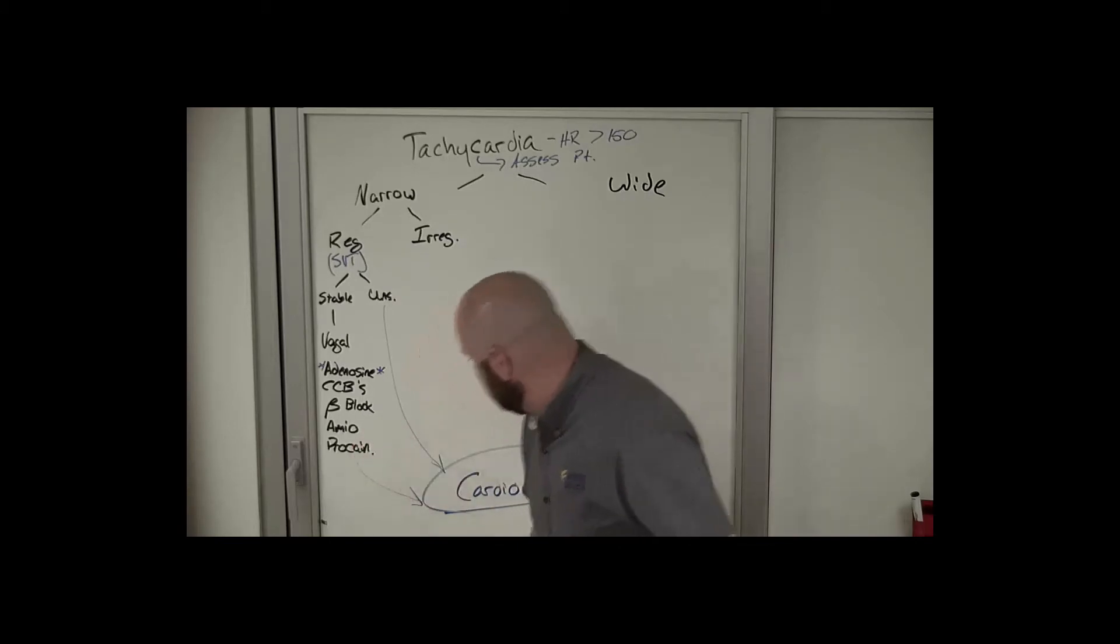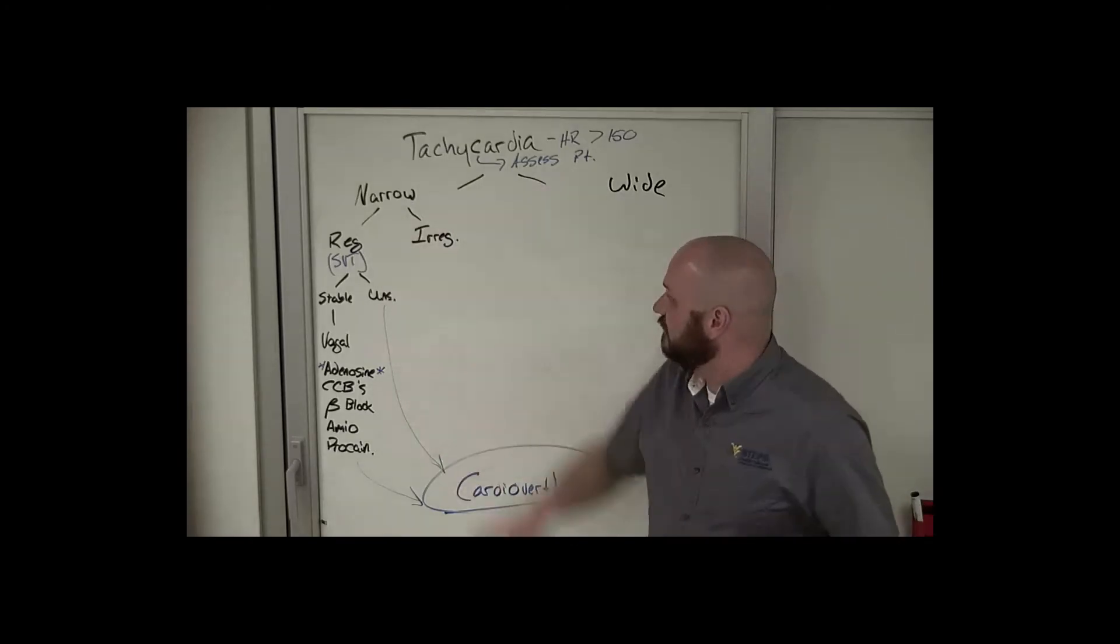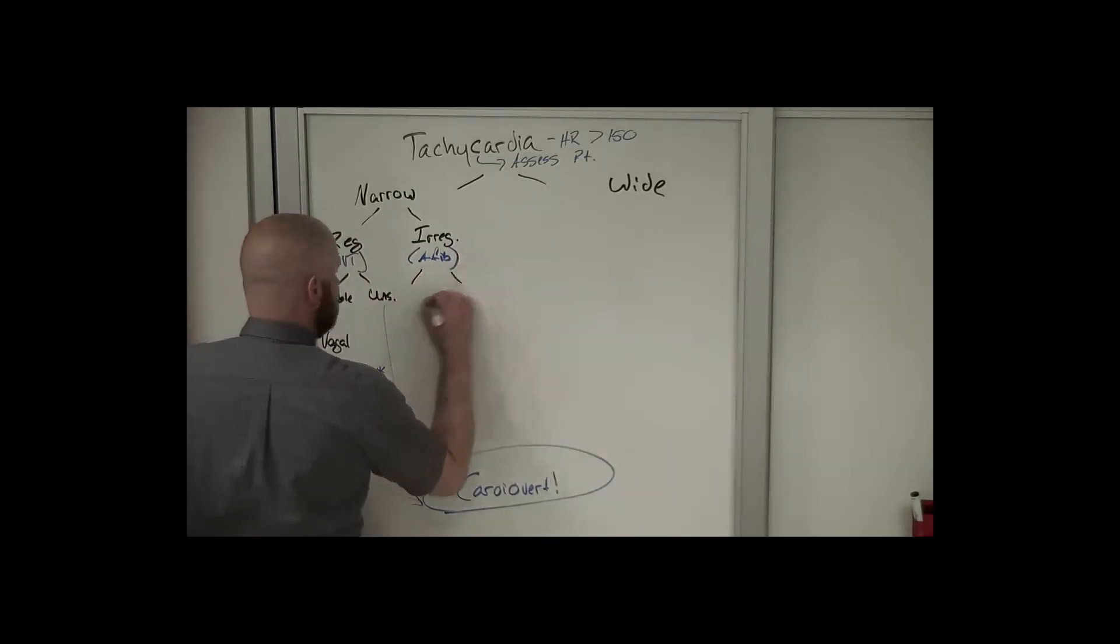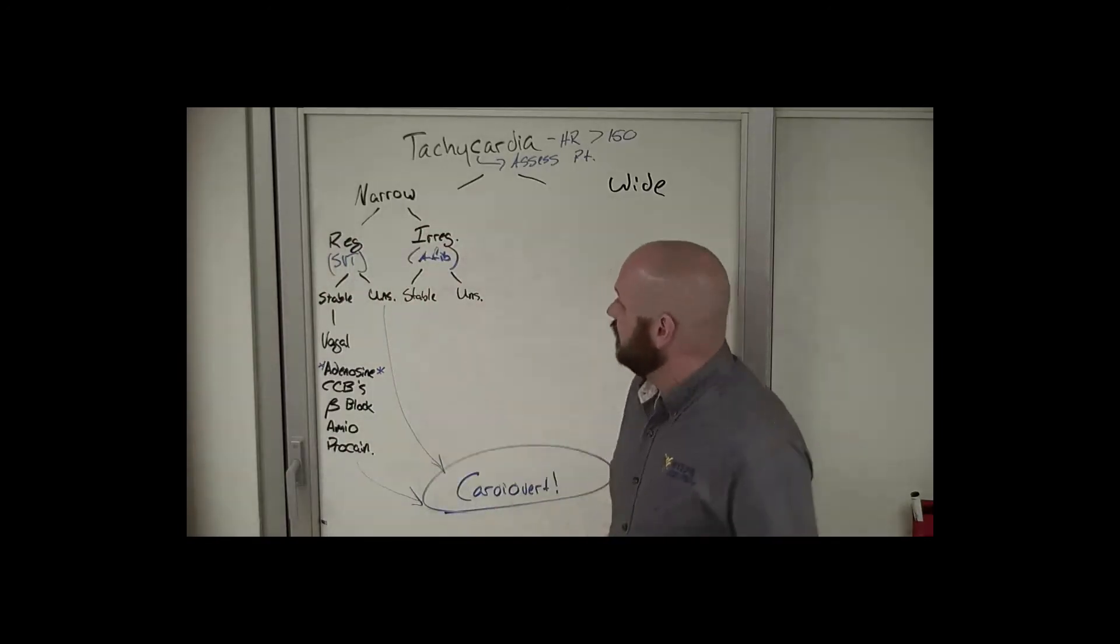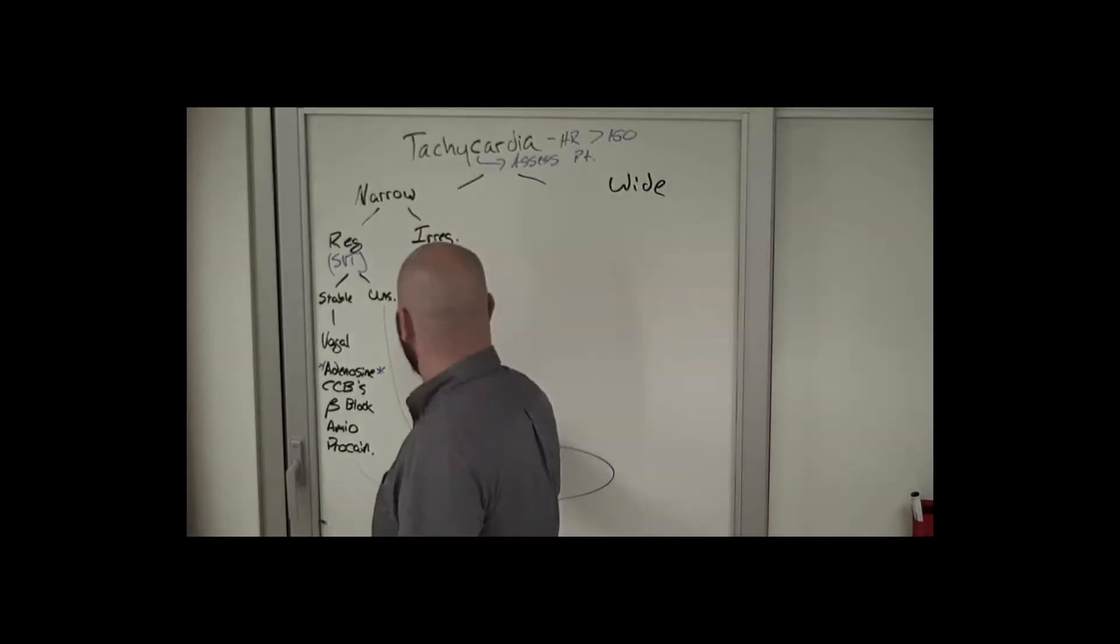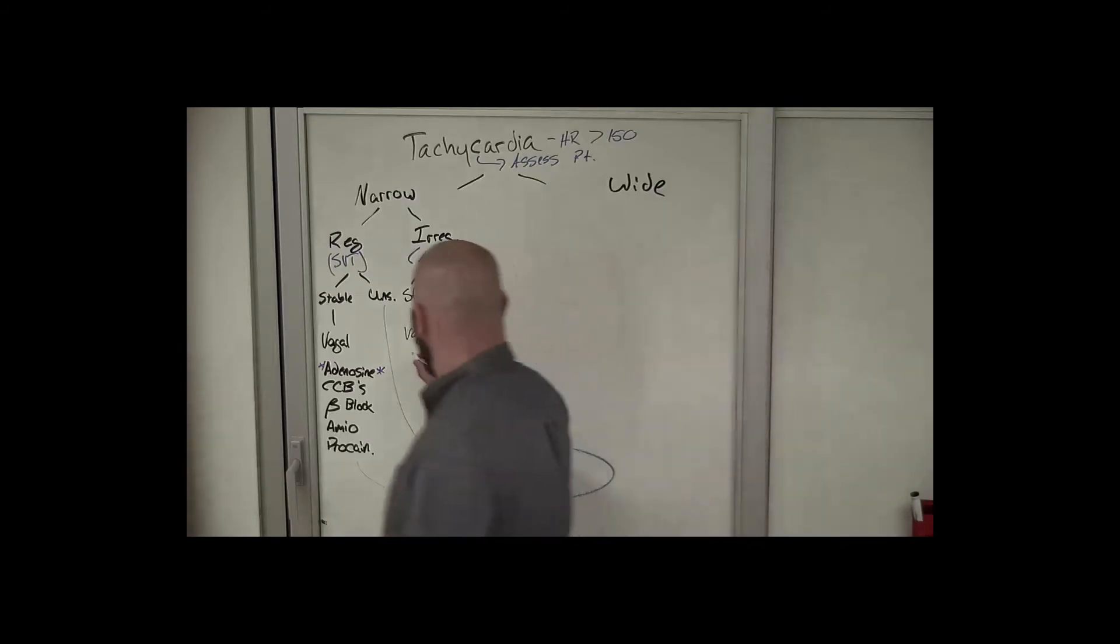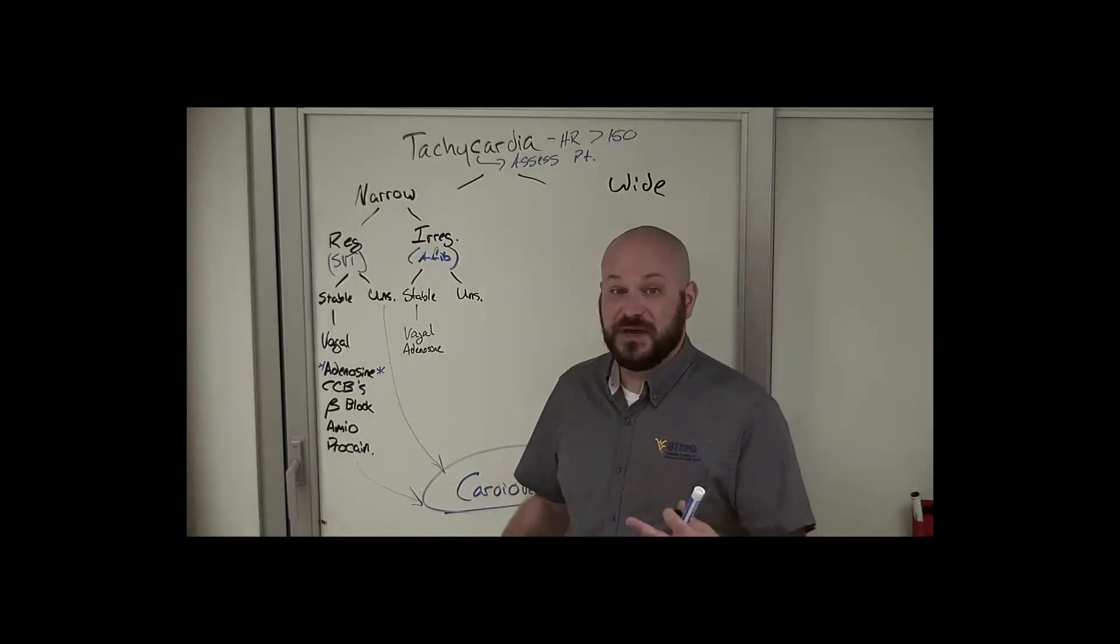So let's go back up to the top here. Fast, greater than 150, narrow and irregular. Classically this is AFib. Doesn't have to be, but that's the classic rhythm here. And then we're going to talk about stable versus unstable again. In our irregular narrow complex rhythm, ideally or theoretically AFib with RVR, the stable rhythm - we're still going to try those vagal maneuvers. They may not work in this patient, but they're really easy, really fast to try. Adenosine is still appropriate here. If nothing else, adenosine may not convert this patient, but it may slow it down for you to confirm that this is AFib. Calcium channel blockers, specifically probably diltiazem, is going to be the drug of choice here.